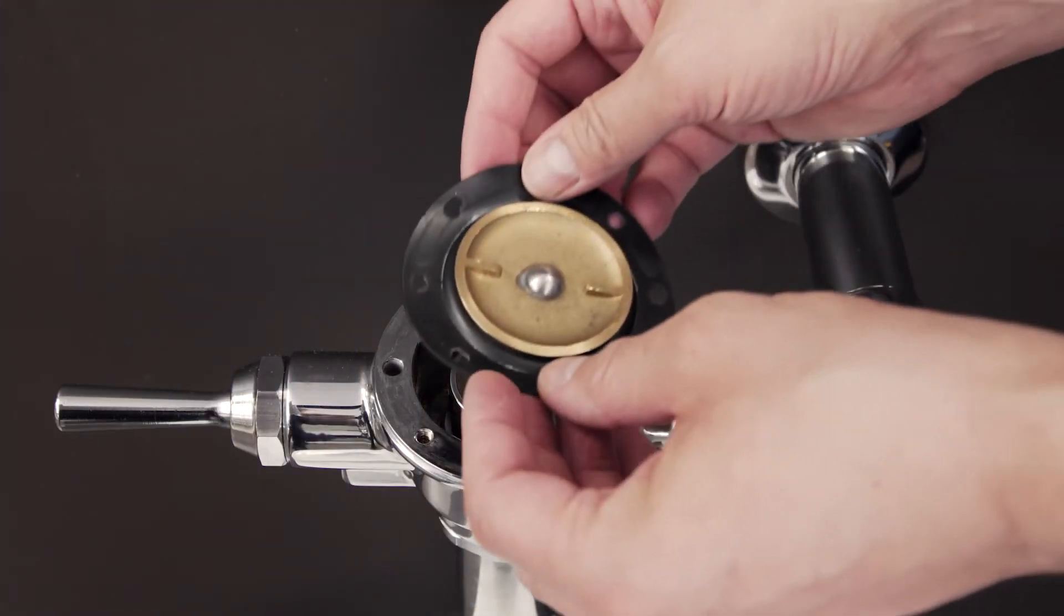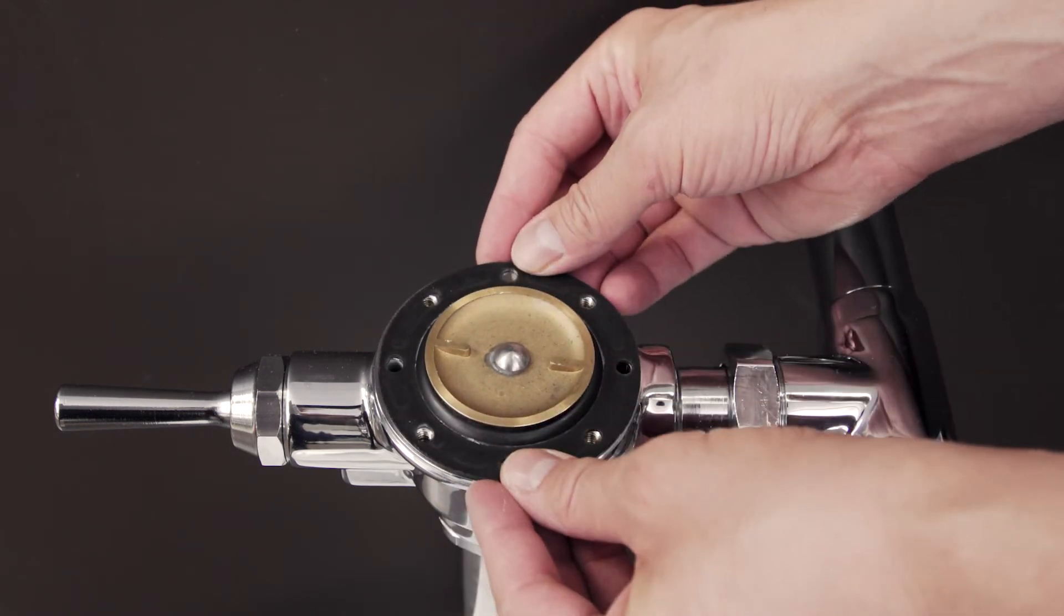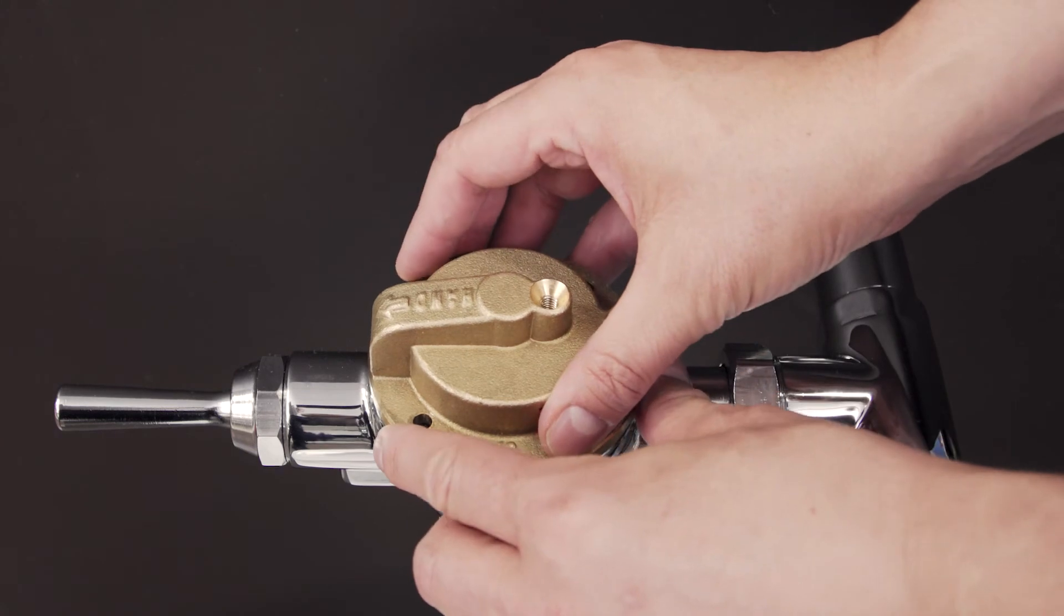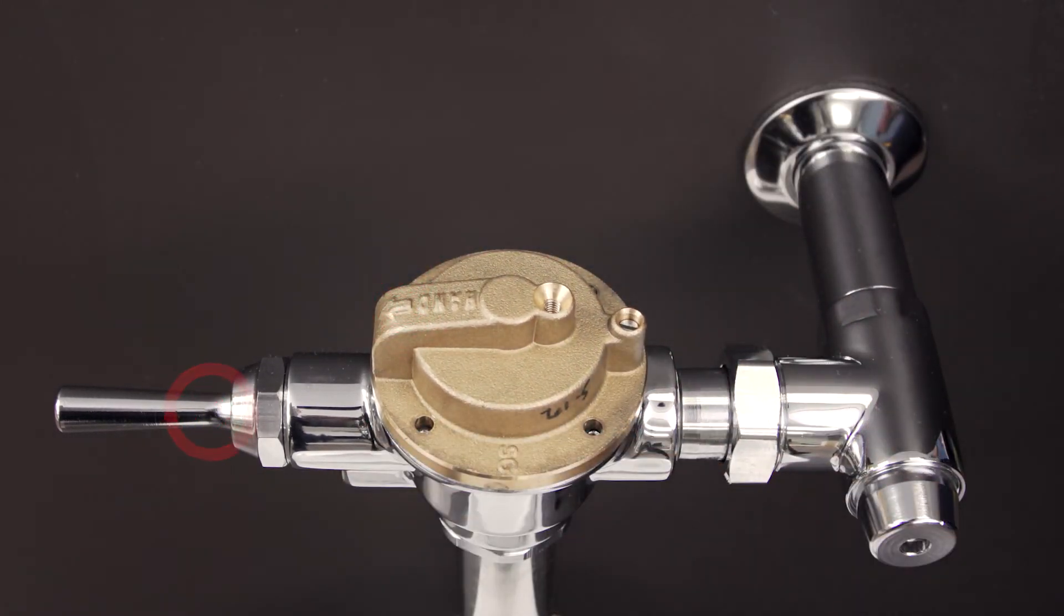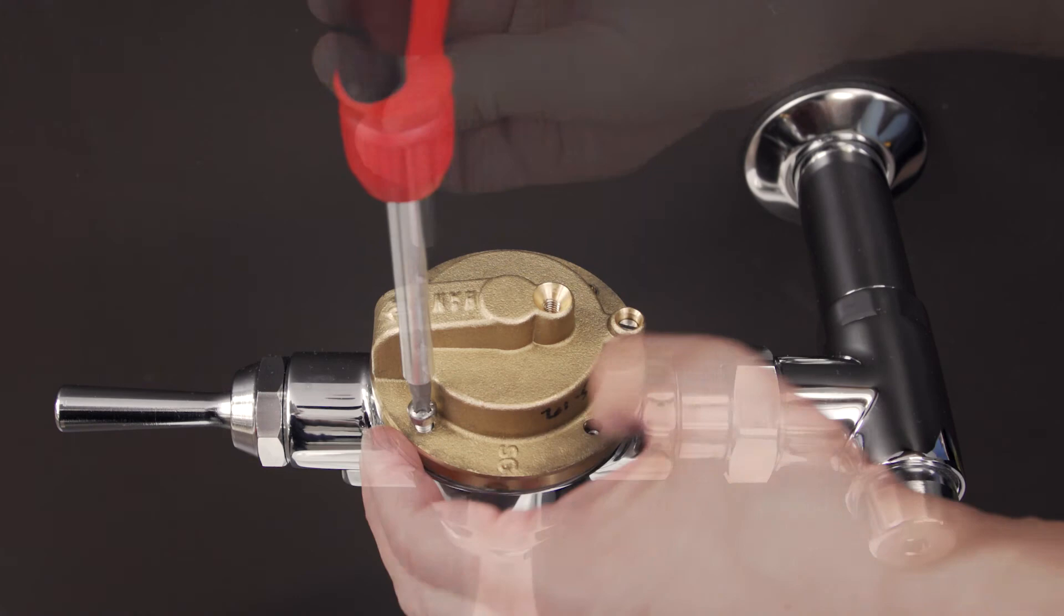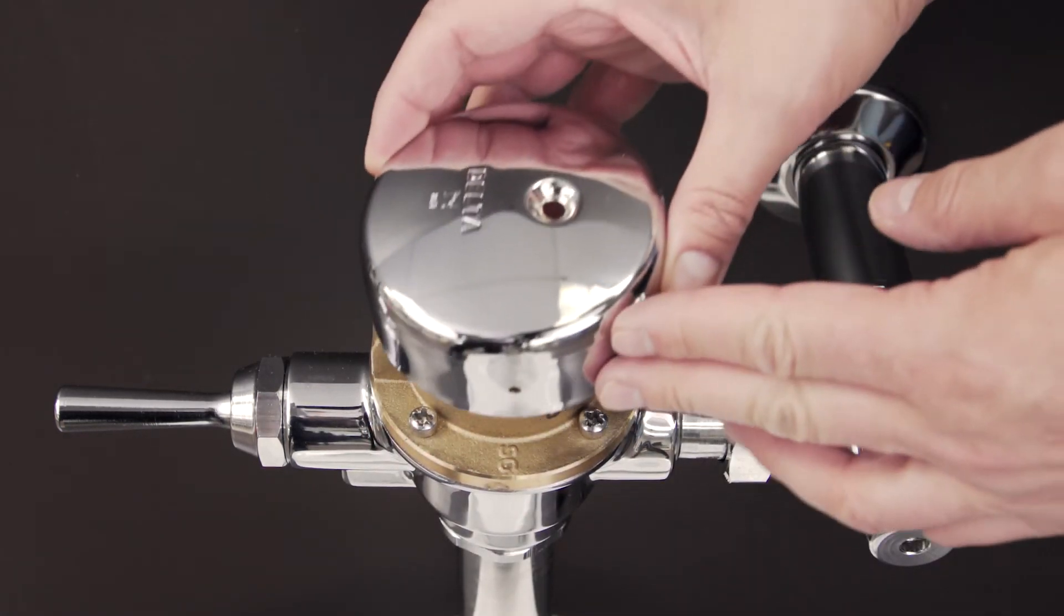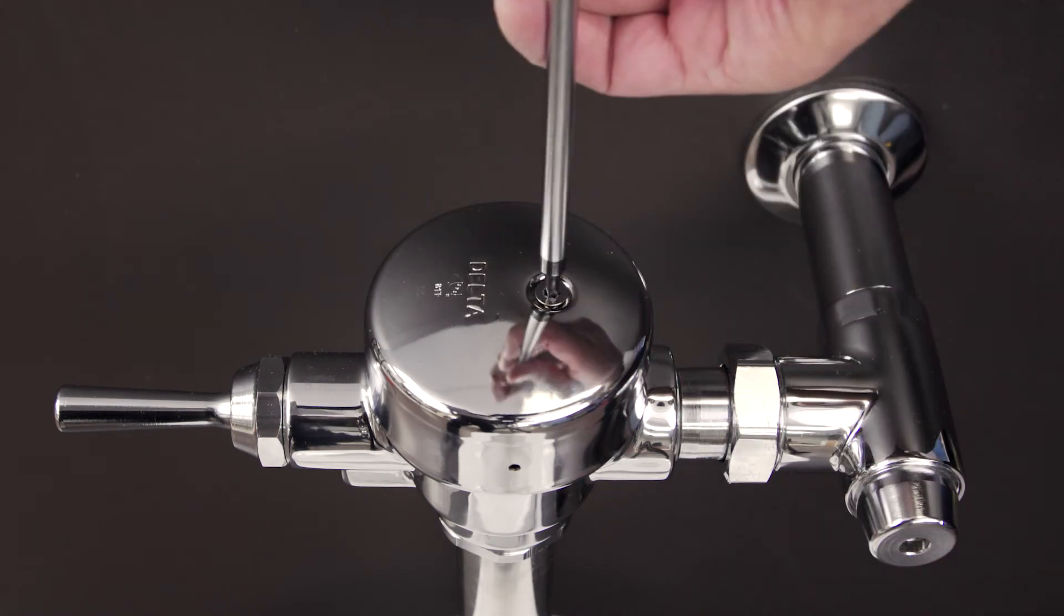Replace the assembly and align the holes. Now, place the cast cap over top. Make sure that the side marked 'handle' is pointing towards the handle. Next, tighten the mounting screws. Replace the cover and tighten the cover screw.